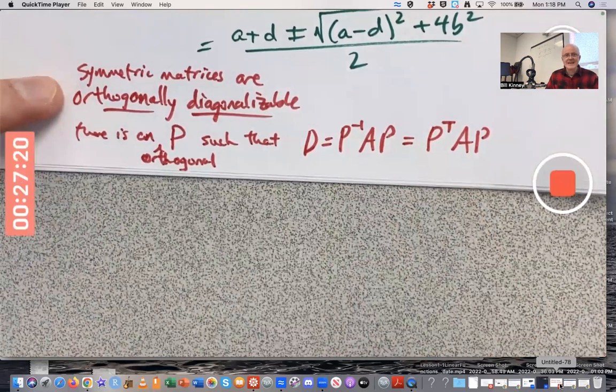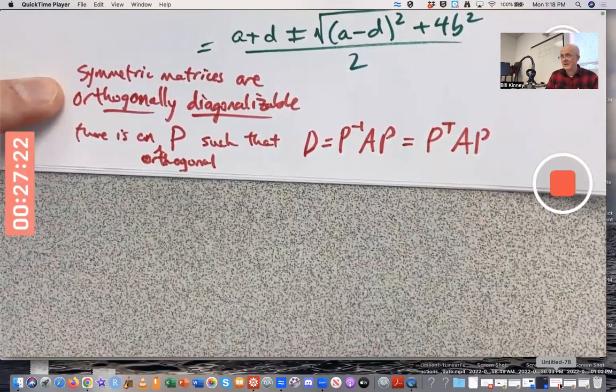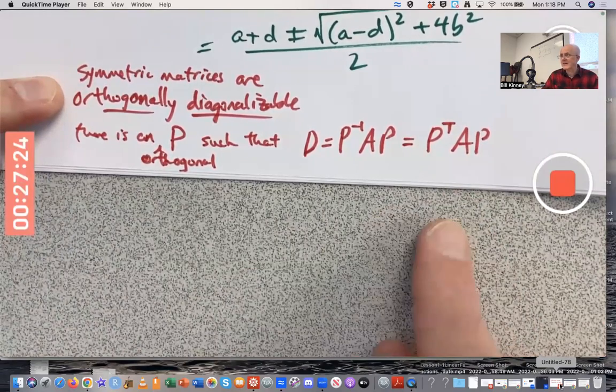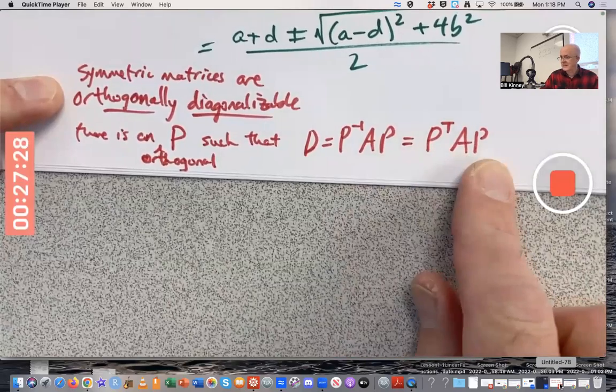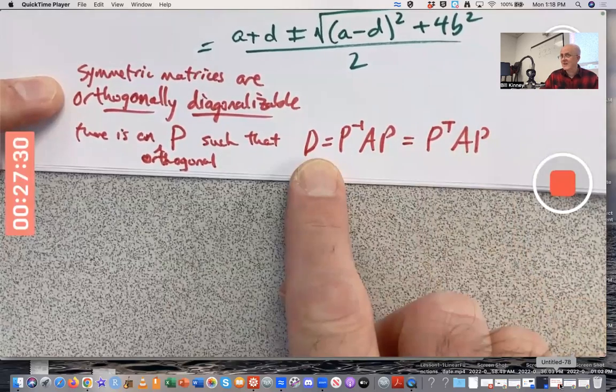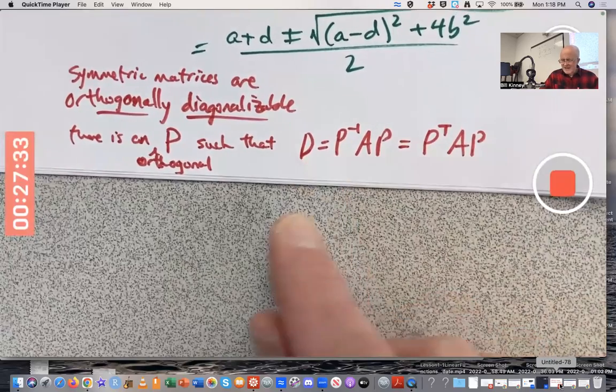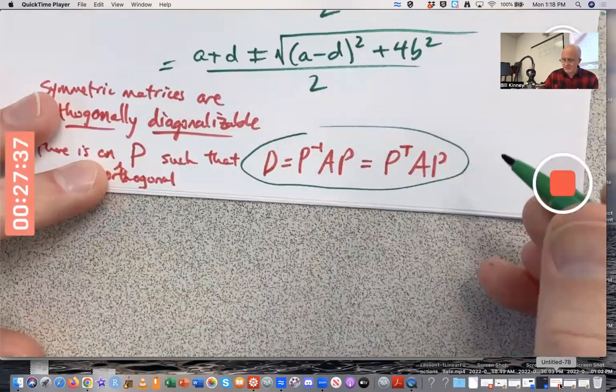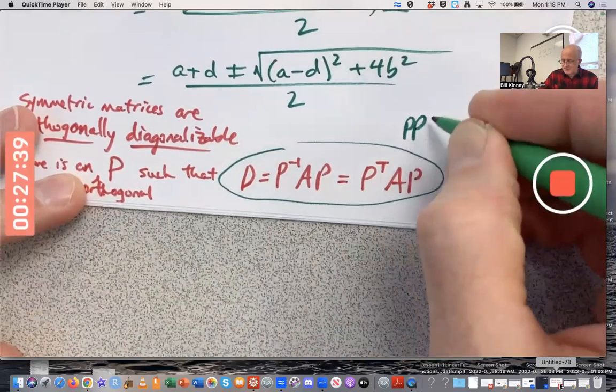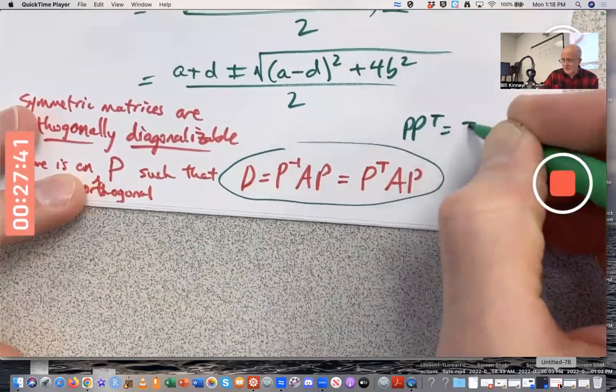And I'm saying if A is symmetric, there will be such a P, where doing P transpose times A times P is diagonal. Very, very useful. But what does it mean for the inverse to equal its transpose? Well, it would mean P times P transpose equals the identity matrix is one thing it would mean.